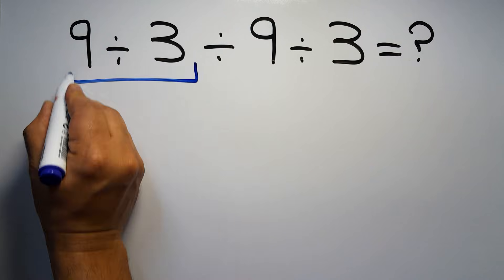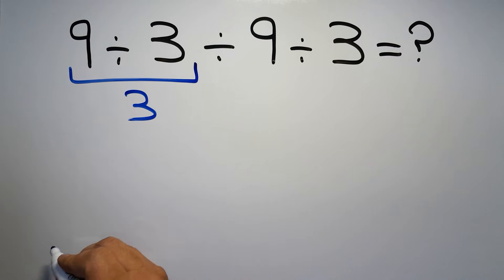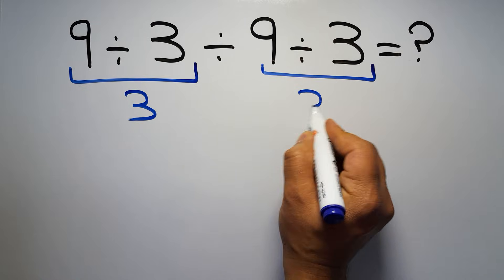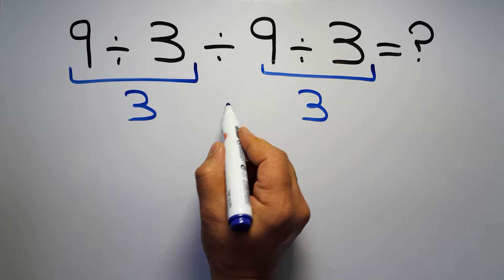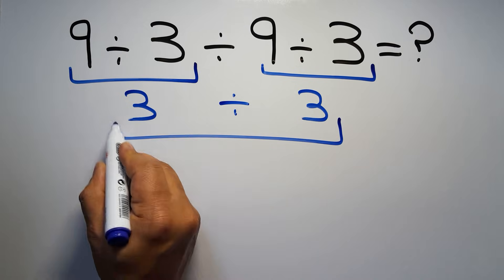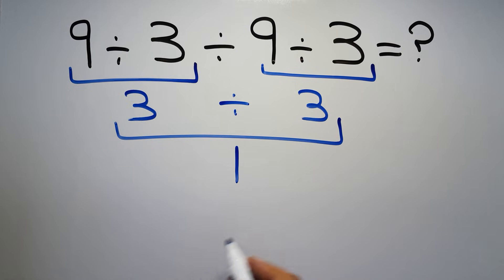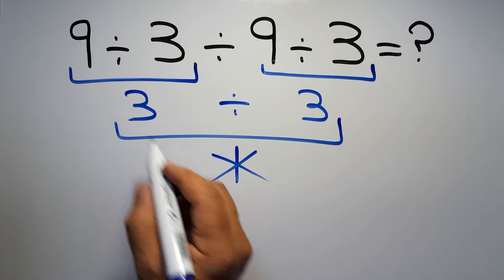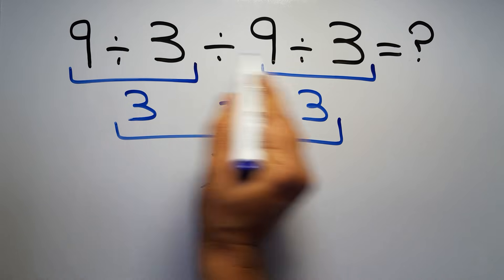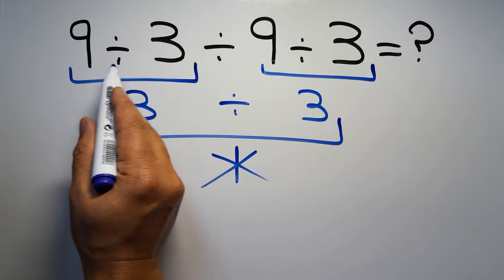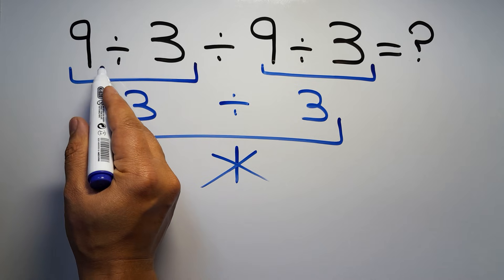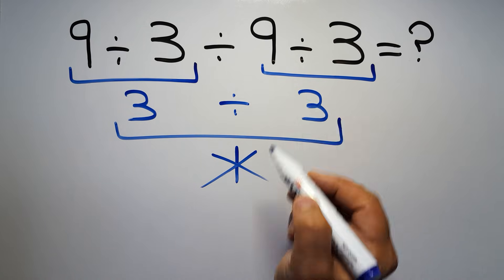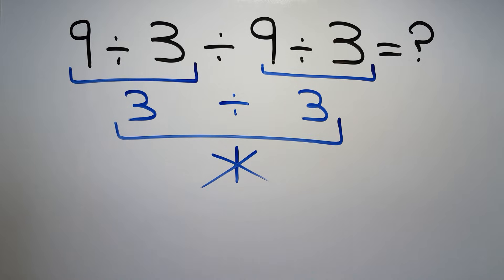9 divided by 3 divided by 3: here we might think 9 divided by 3 equals 3, and then 3 divided by 3 equals 1, but this answer is not correct. According to the order of operations, when we have more than one division in an expression, we have to work from left to right. So if we do a later division before an earlier one, it is wrong.